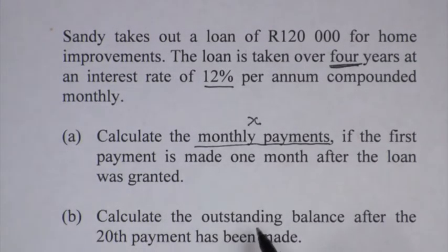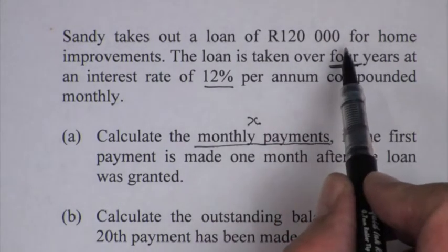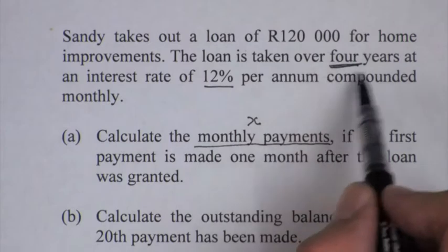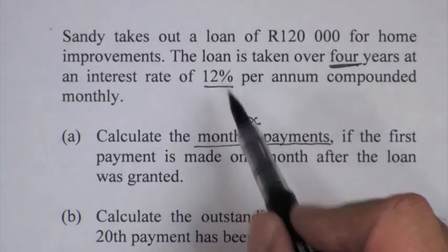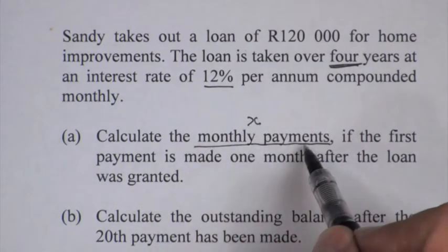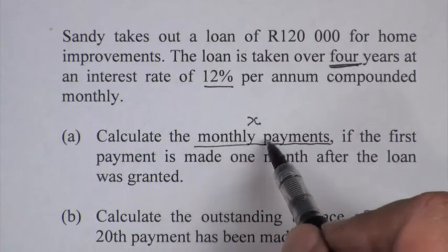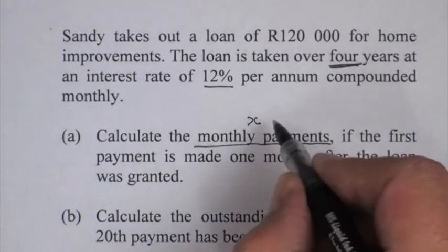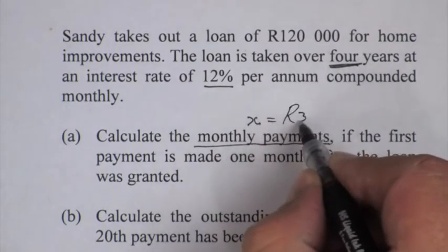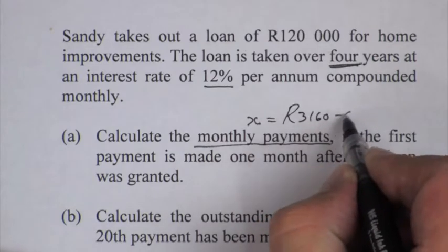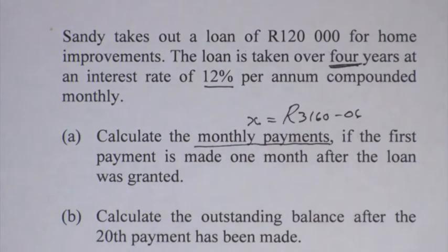Let's read the B part of this question. Just to refresh your memory again, it's a 120,000 rand loan over four years at 12%. The first part, find X, you remember that is now the 3,160 rand and 6 cents. So that part we've got, 3160 and 06. So we know what the monthly payments are.